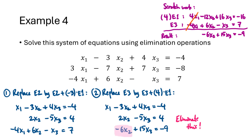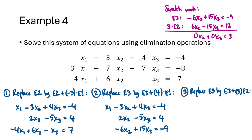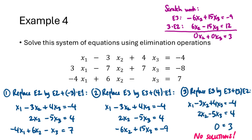Now we need to eliminate the x2s from the third equation. We're eventually trying to find a value of x3 so we can work back to find x2 and then x1. We multiply the second equation by 3 and add the result to the third equation to eliminate x2. But as it turns out, this also unexpectedly eliminates the x3s. The resulting third equation looks like 0 equals 3 — since 0 doesn't equal 3, this system of equations has no solutions.